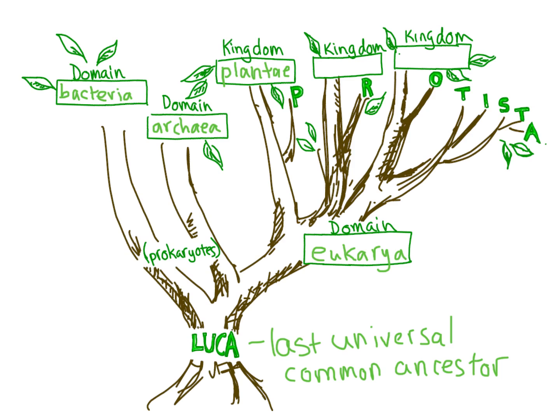Plantae, or plants. Animalia, or animals. Fungi. And scattered amongst the branches, many kingdoms of Protists. The rest of this video will go through each of these domains and kingdoms and summarize their major characteristics.